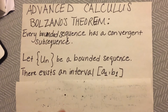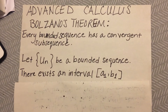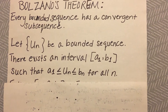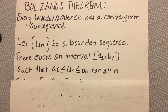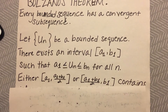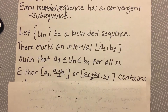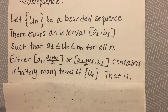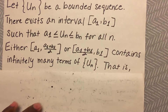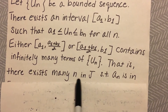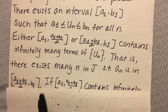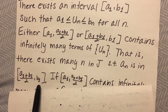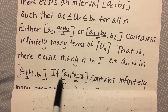There exists an interval A1, B1 such that A1 is less than or equal to U sub N, less than or equal to B1 for all N. Either the interval [A1, (A1+B1)/2] or the interval [(A1+B1)/2, B1] contains infinitely many terms of the sequence U sub N. That is, there exist infinitely many N in J such that U sub N is in the interval [(A1+B1)/2, B1].